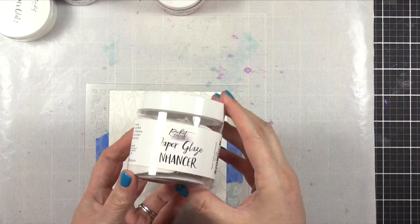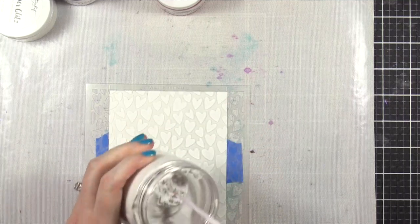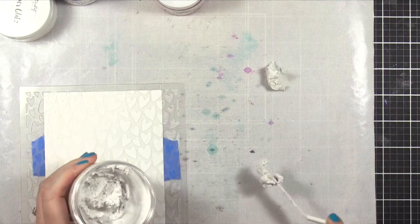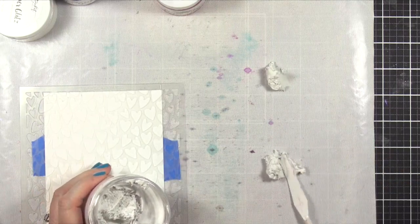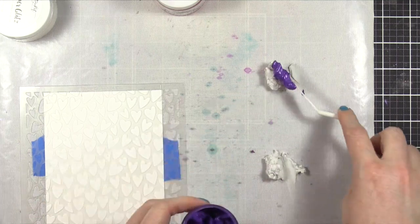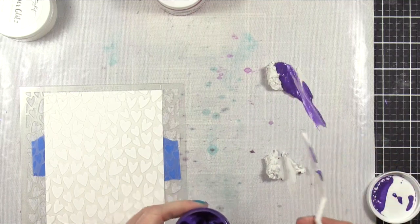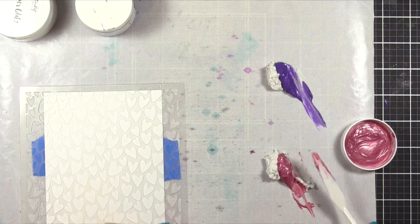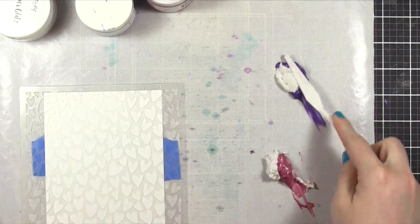I'm going to move on to Paper Glaze Enhancer. This one is also really fun. It has this very foamy cloud-like texture. It's very interesting. On the bottle, it recommends to mix it in equal quantities with Paper Glaze, and this is a really fun product because as you mix it, it not only changes the color of the Paper Glaze,